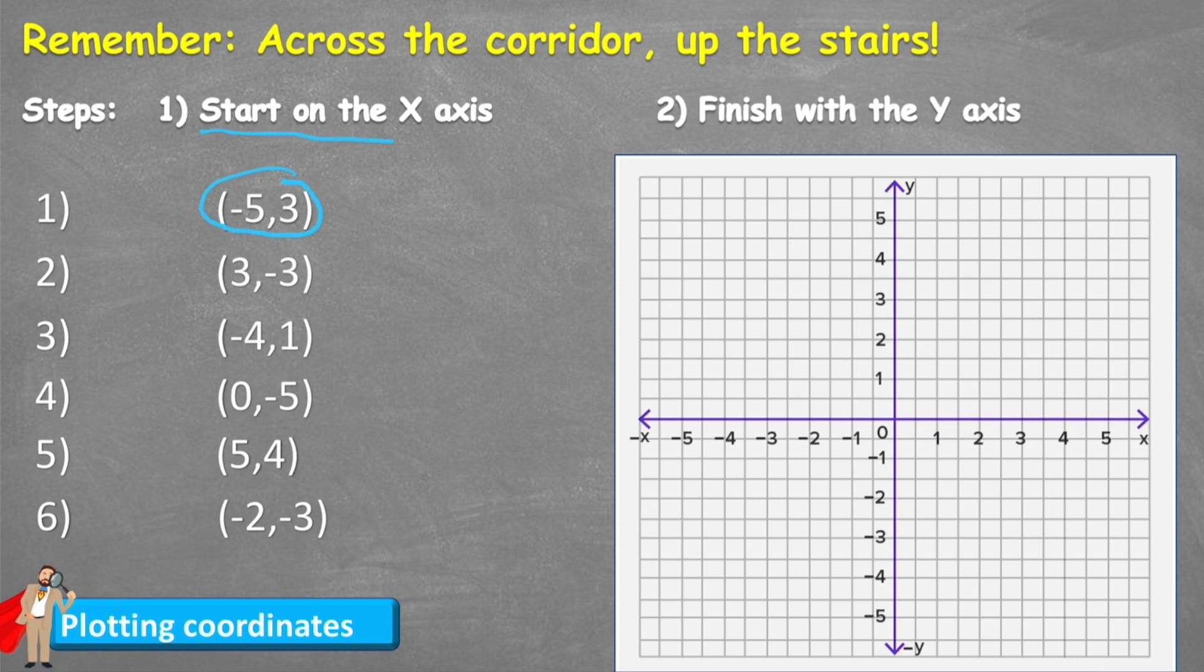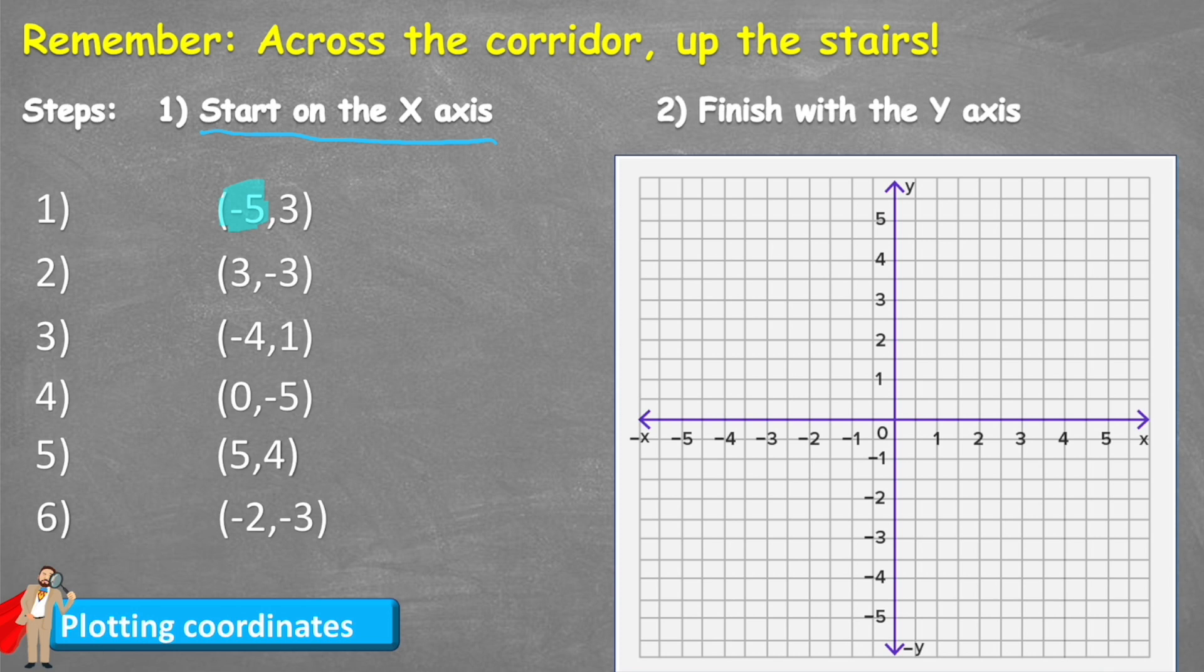So step one, we're going to start with our X axis, which is our first coordinate minus 5. So what I'm going to do is look along my X axis for the negative 5, and I can see it just here.